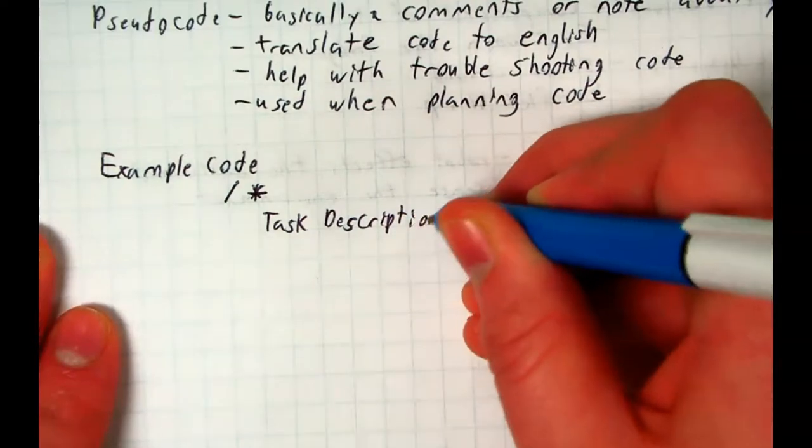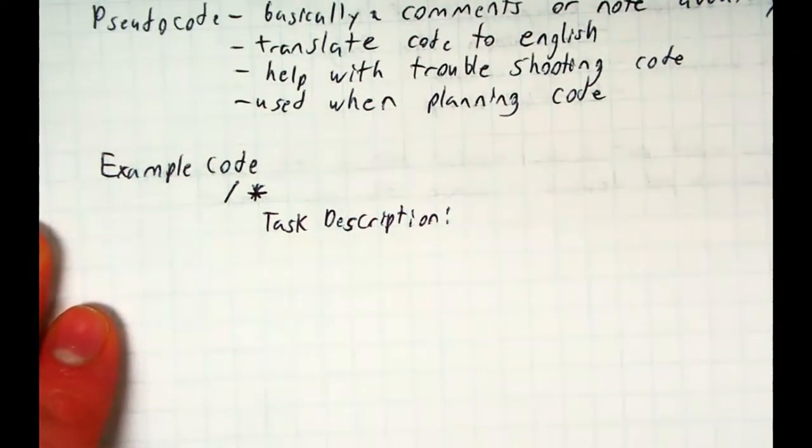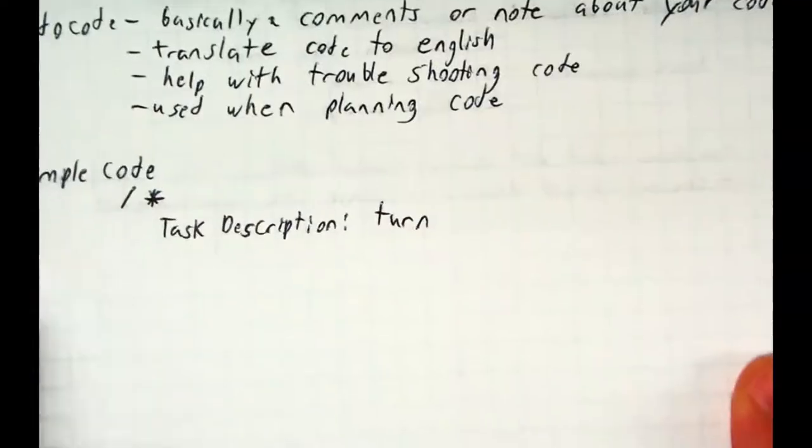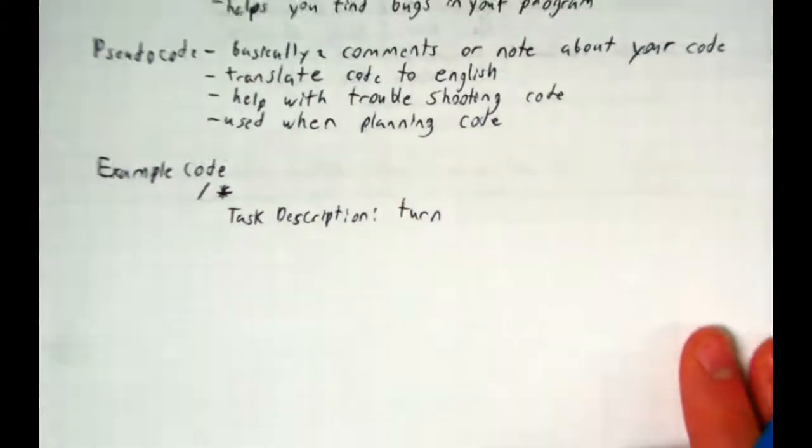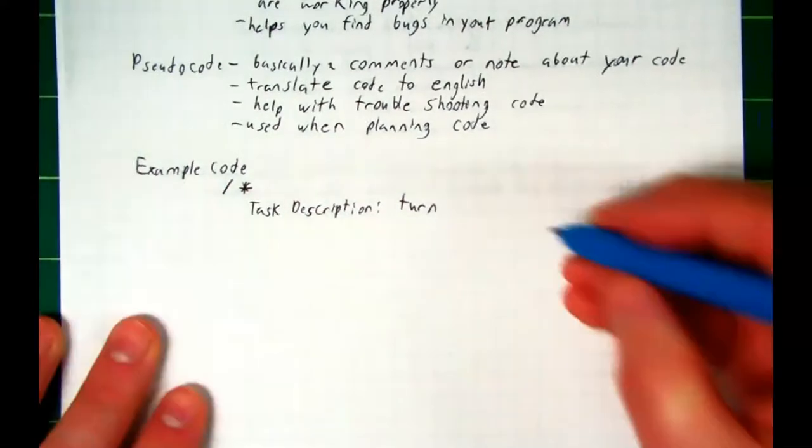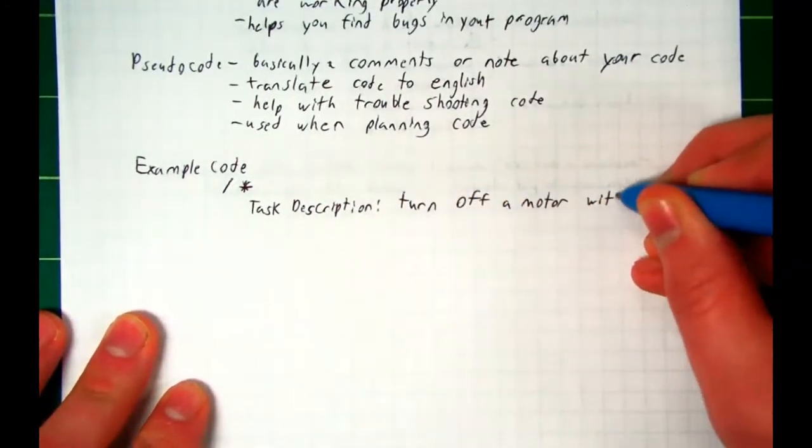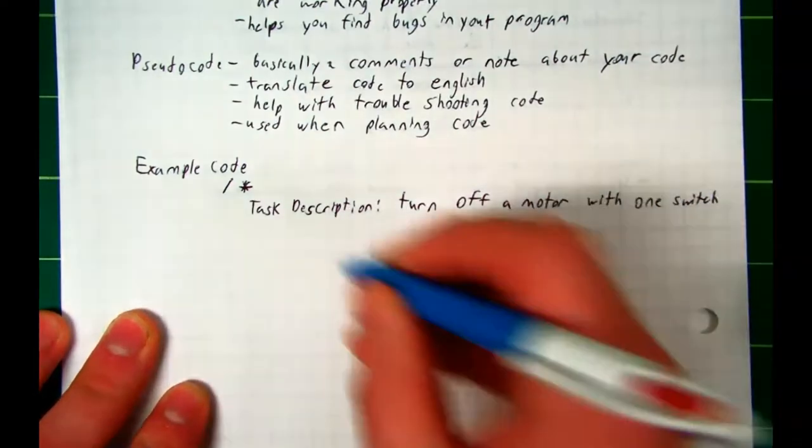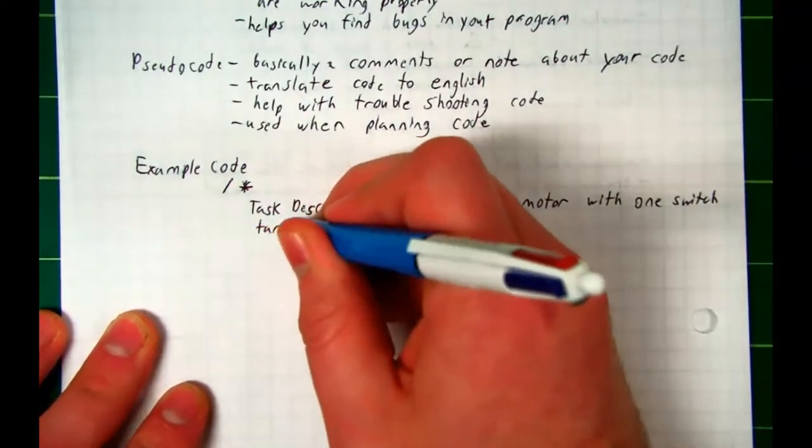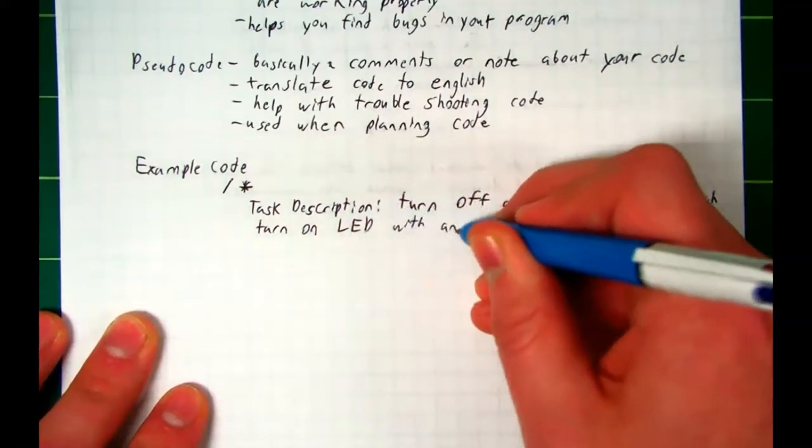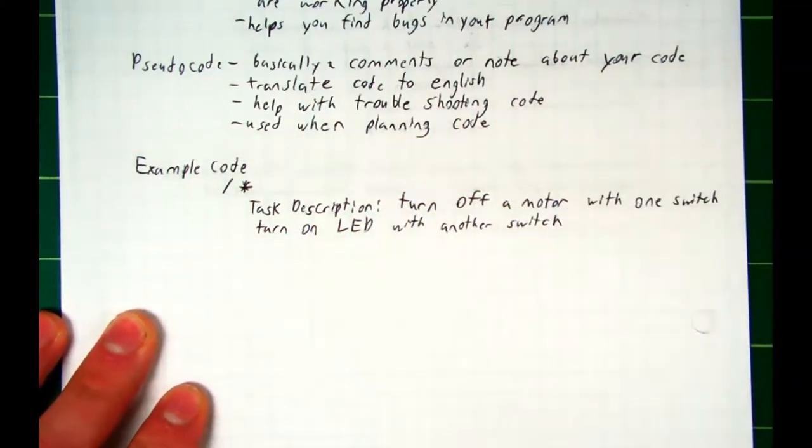Now the task description I want is to turn off a motor with one switch, then turn on an LED for five seconds with a different switch. So let's write that out. Turn on. Let's zoom out just a little bit so we can see what's going on. I want to turn off a motor with one switch, and then I want to turn on my LED with another switch. Simple.